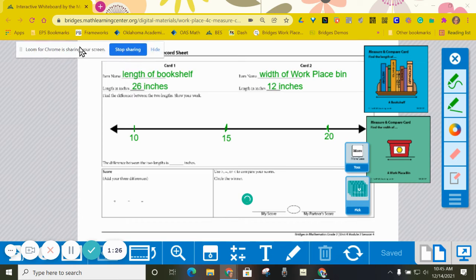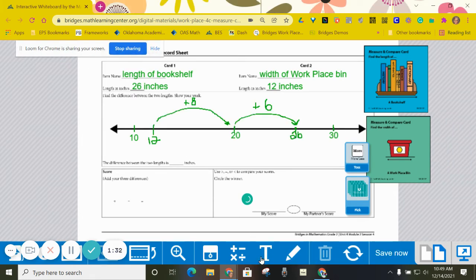So I think I'm going to do mine on the number line. As you can see, on my number line, I started at 12, and then I made hops to get up to my 26.